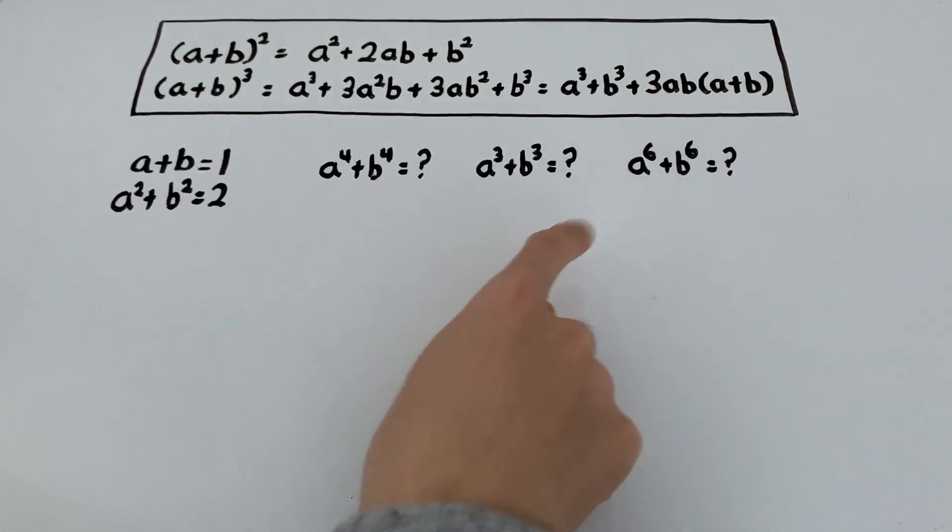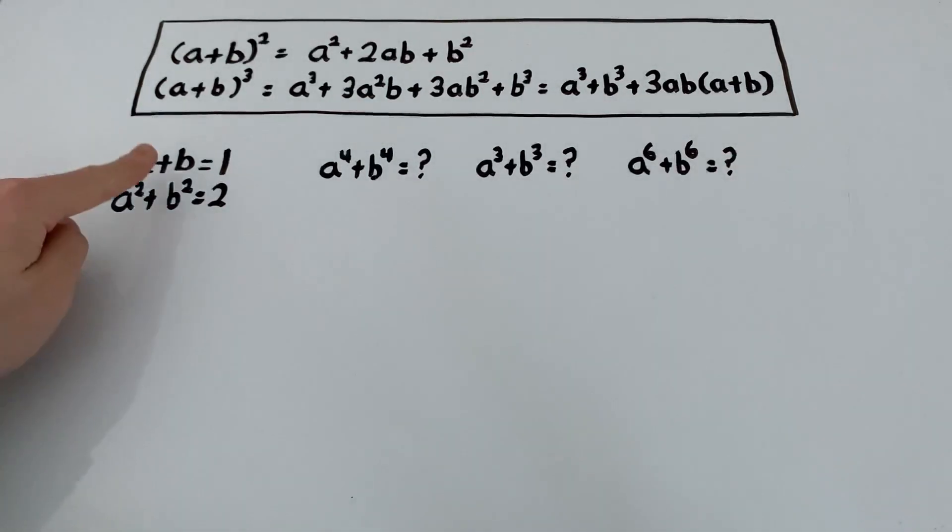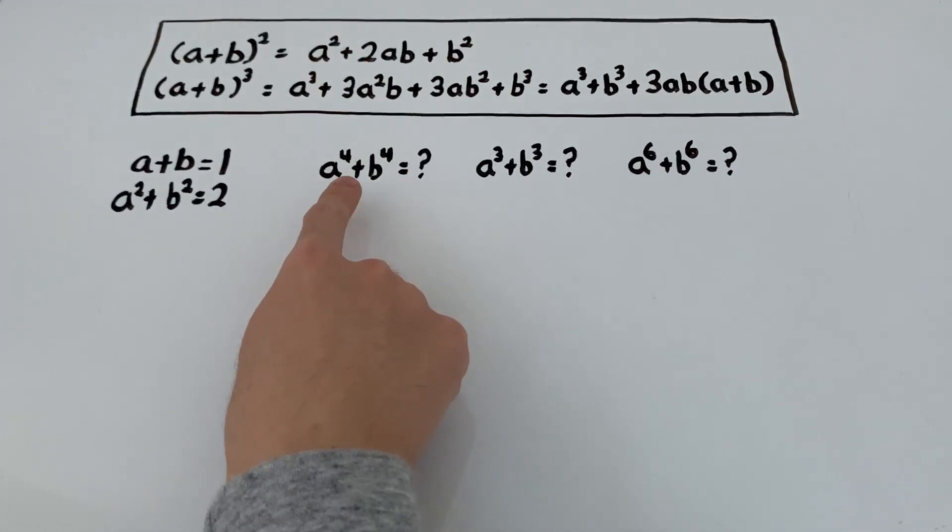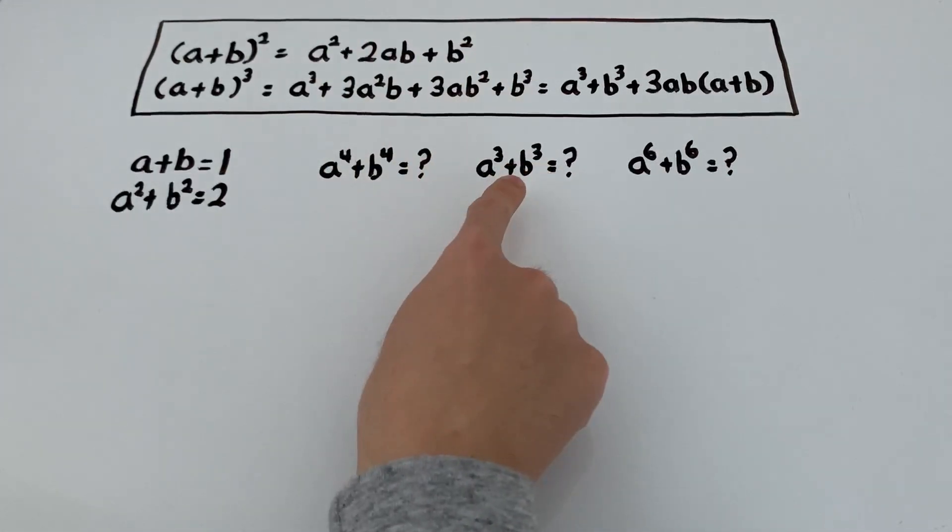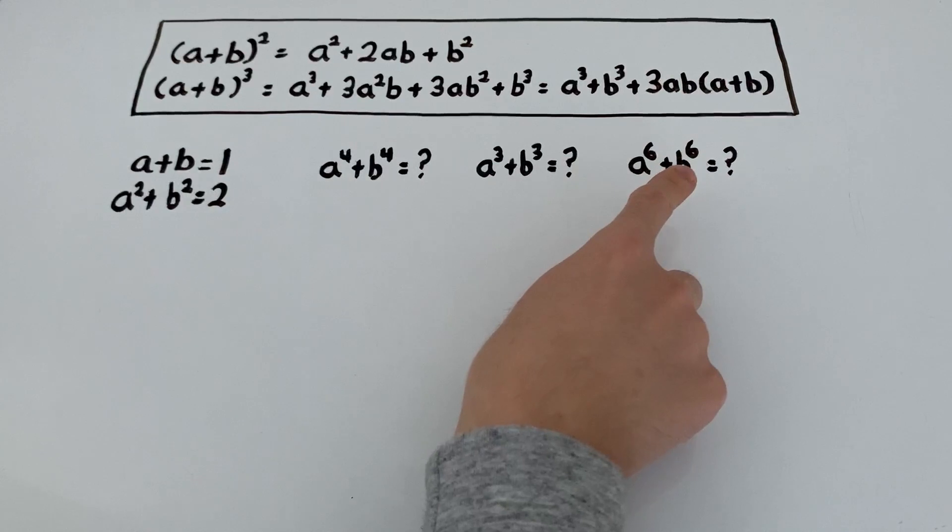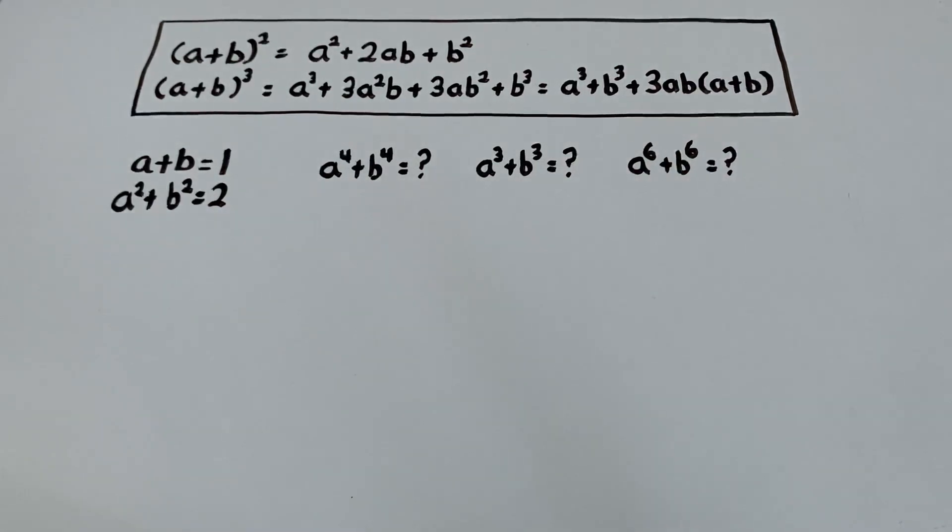So this is a problem which you must know how to solve. Given that a plus b equals 1, a squared plus b squared equals 2, we need to find three things: a to the 4th plus b to the 4th, a cubed plus b cubed, and a to the 6th plus b to the 6th.